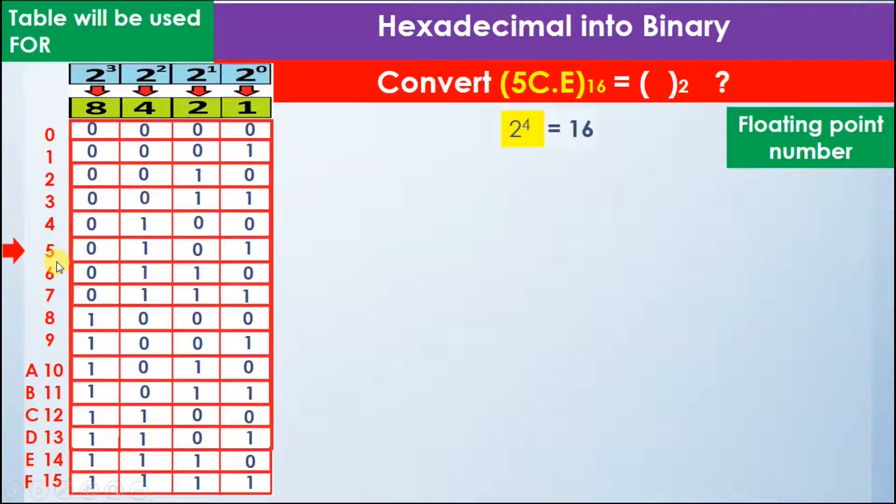The binary value of 5 in the table is 0101, so we will write 5 as 0101.